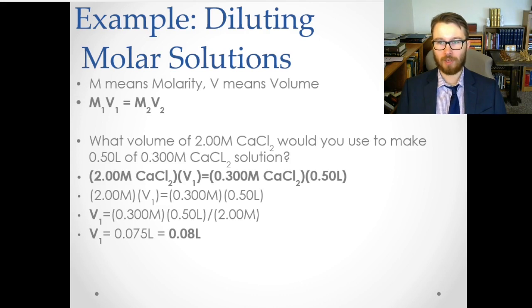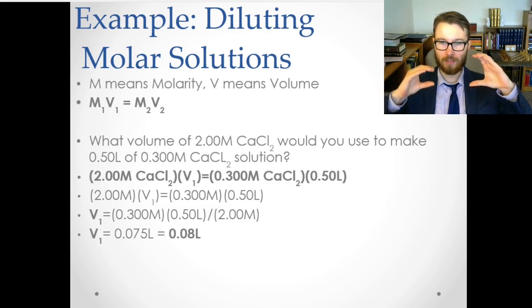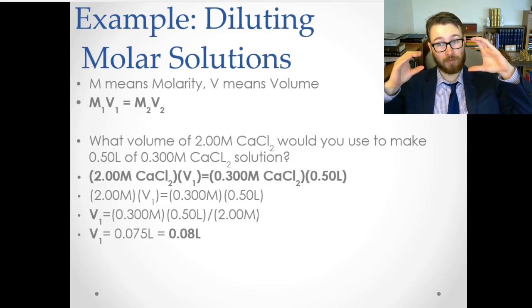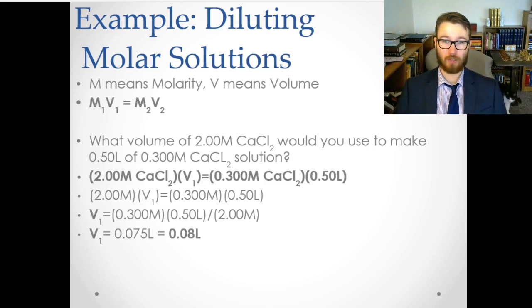So M1 times V1 equals M2 times V2, meaning your initial molarity times your initial volume is equal to your final molarity times your final volume. If you have a molarity of 1 with a volume of 2, and you have a volume of 1, you'll get a molarity of 2. It's just a ratio.